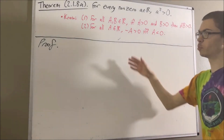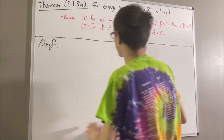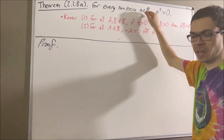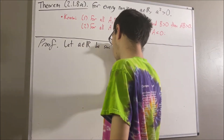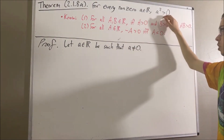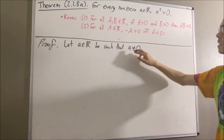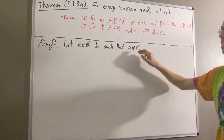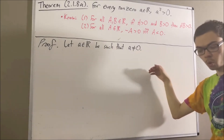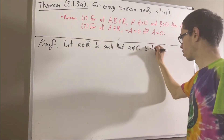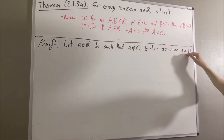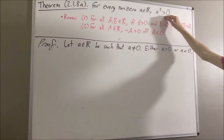Now let's get into proving the theorem. To start out the proof, let's give ourselves an arbitrary non-zero real number a. Our whole goal now is to deduce that a squared is greater than zero. Since a is not equal to zero, we know that either a is greater than zero or a is less than zero. We're going to prove that in either case we have that a squared is greater than zero.